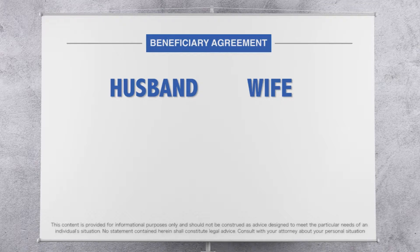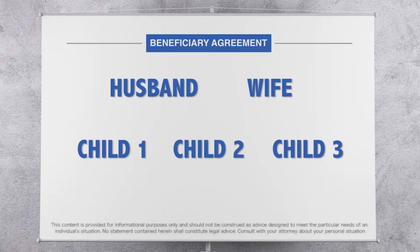But what if your wife dies before you, or you and your wife die at the same time? In this scenario, you may want what are called secondary or contingent beneficiaries. Let's say you and your wife have three children — child one, two, and three. These children can be named as secondary or contingent beneficiaries, to make it clear who your assets should go to in the event that your primary beneficiary dies before you or at the same time.